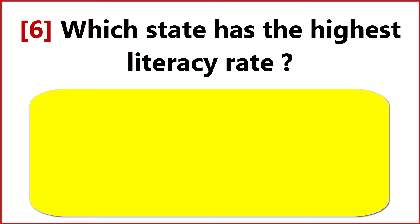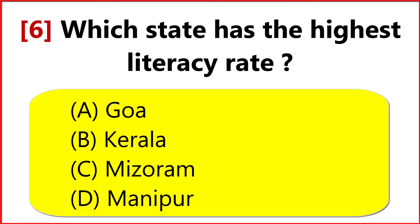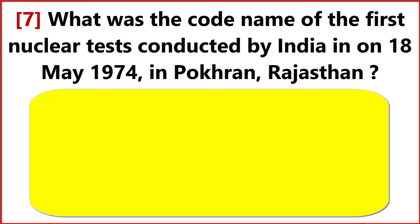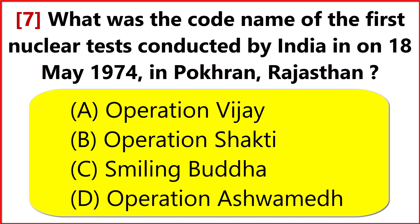Which state has the highest literacy rate? Option B: Kerala. What was the codename of the first nuclear tests conducted by India on 18th May 1974 in Pokhran, Rajasthan? Option C: Smiling Buddha.